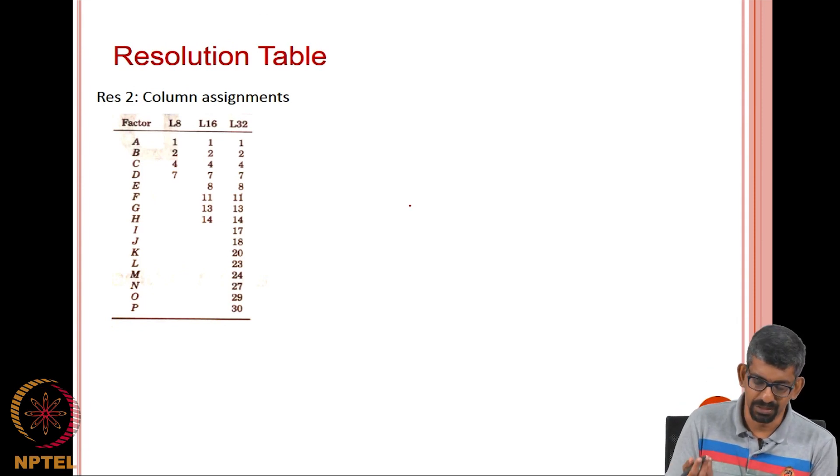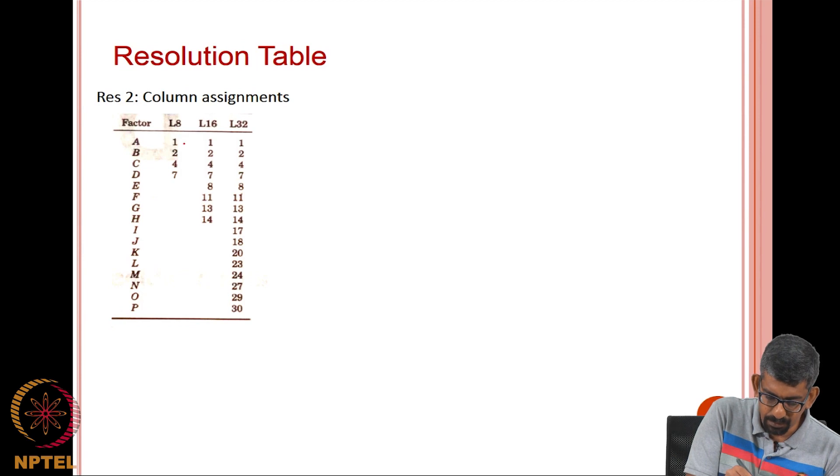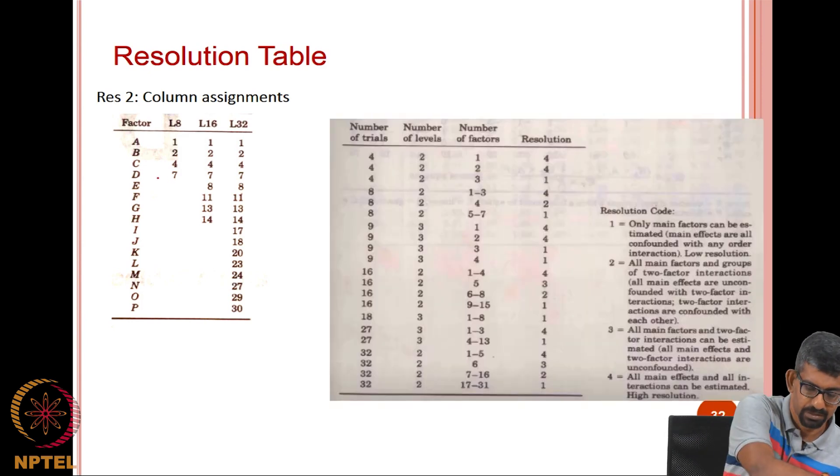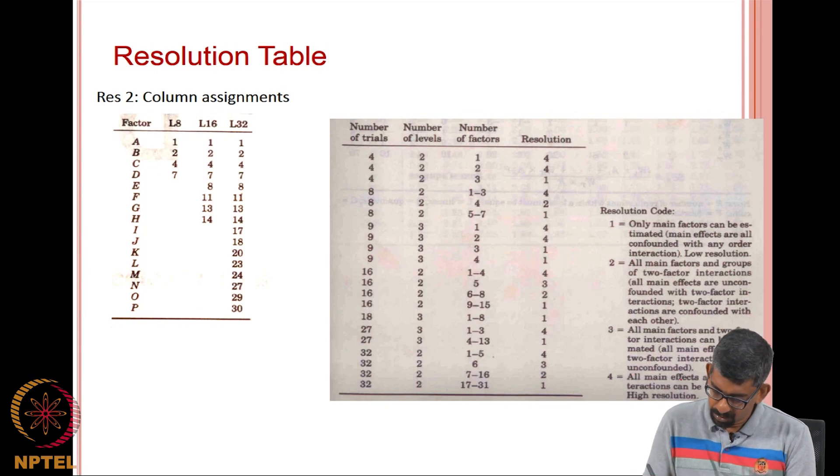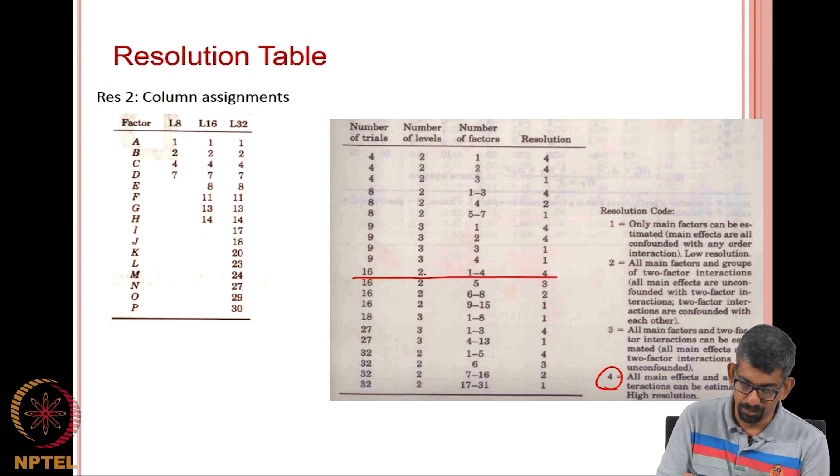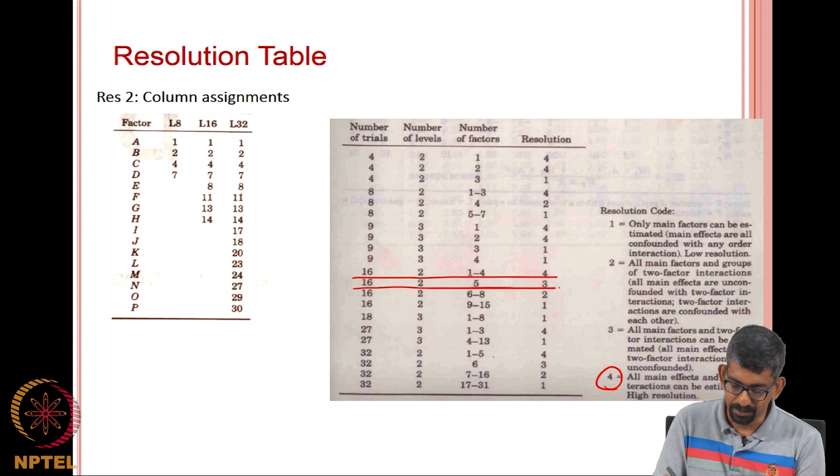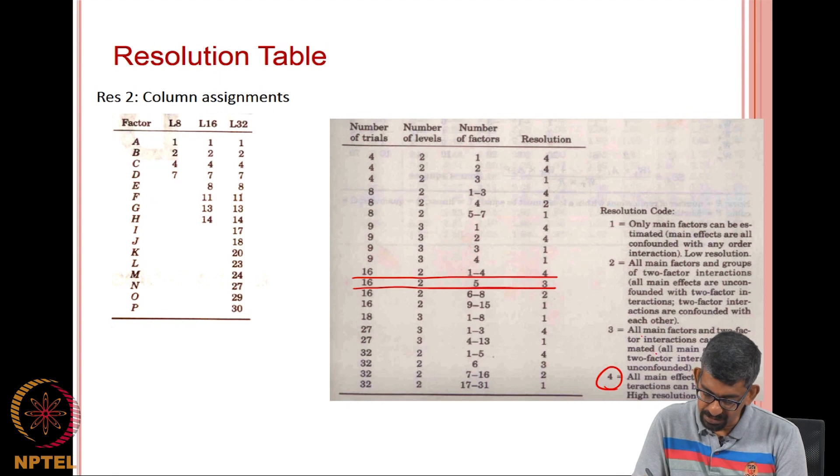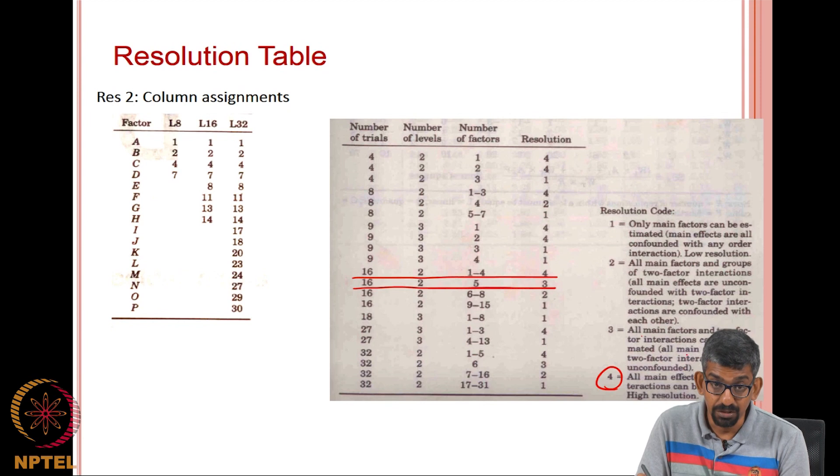This is just a resolution table. I used the word resolution. The top level resolution is called resolution 4 which is a full factorial experiment. What it says is the factor and the column assignments. A will be in column 1 if it is an L8 and D will be in column 7 if it is an L8. It keeps going like that. Take this particular case. All main effects and all interactions can be estimated. That is called your highest resolution experiment. For instance, if you take an L16, if its resolution number is 4, then what happens is factor 1 to 4 number of levels is 2. 2 raise to 4 that is what is this. But then my resolution is 3, what does that mean?